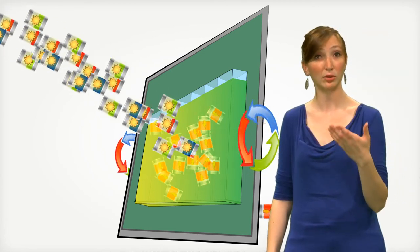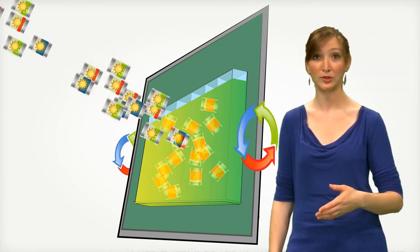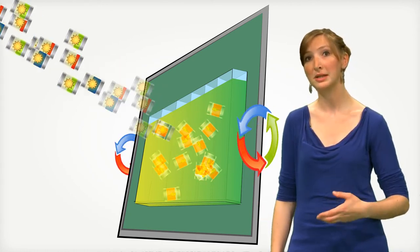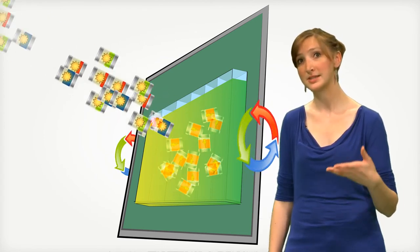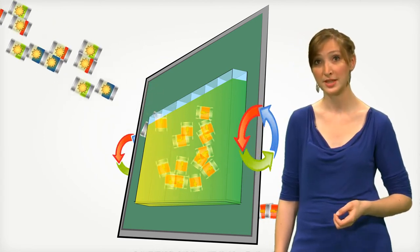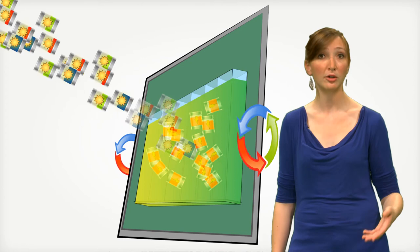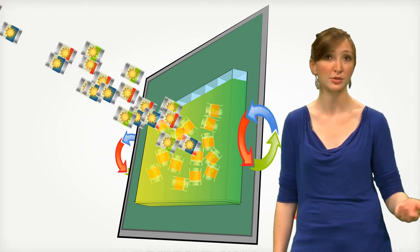Grätzel cells have several advantages compared to silicon cells. They work with very little light, they are almost transparent, to the extent that the idea of covering windows with it has been considered. And they are really easy to manufacture, even by non-professionals.